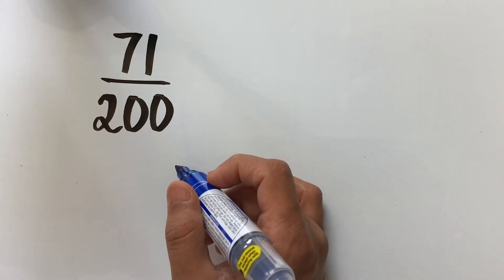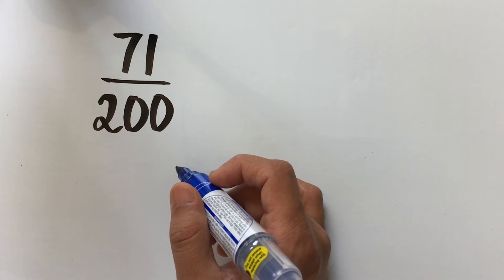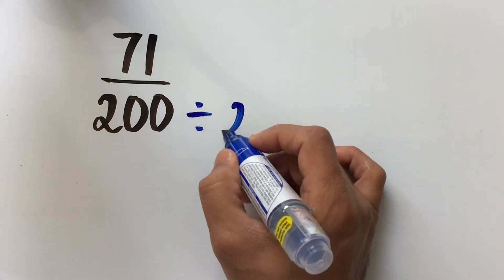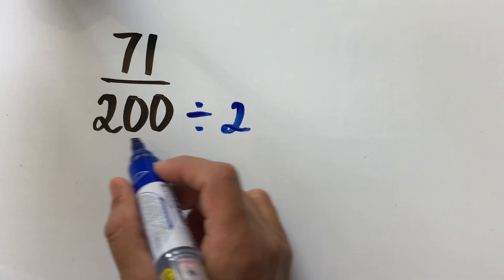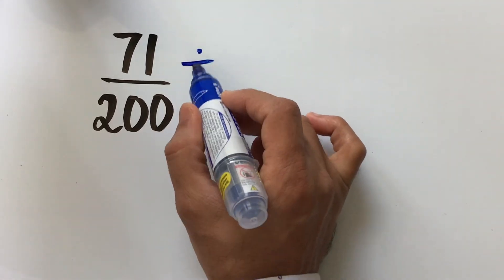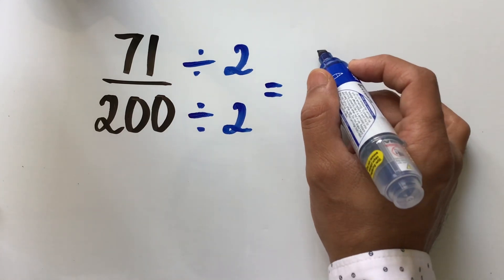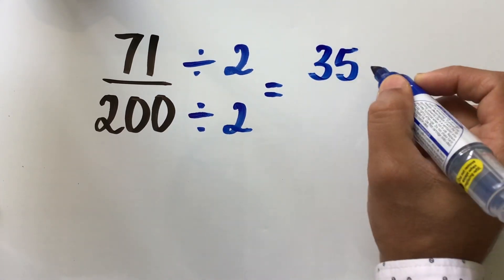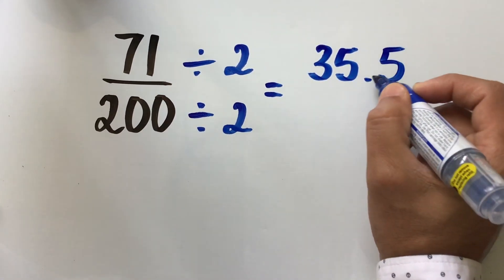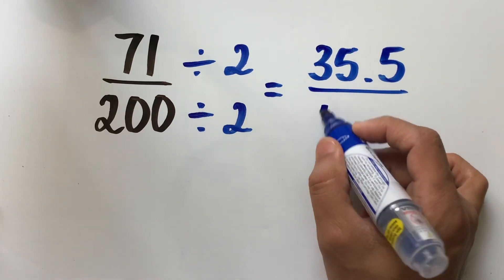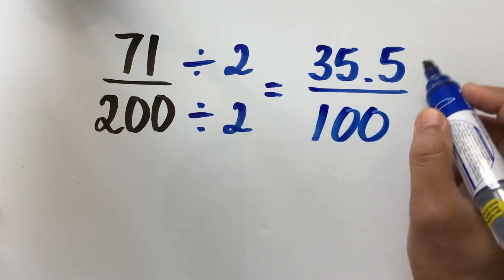So, here we need to think 200 divided by what will give me 100, and I think we know that would be 2. So, if you divide the denominator by 2, we need to divide the numerator also by 2. So now, 71 divided by 2 gives us 35.5, which is basically half of 71, and 200 divided by 2 gives us 100.